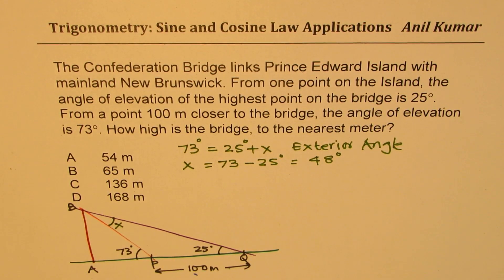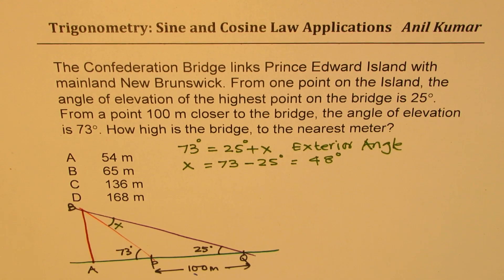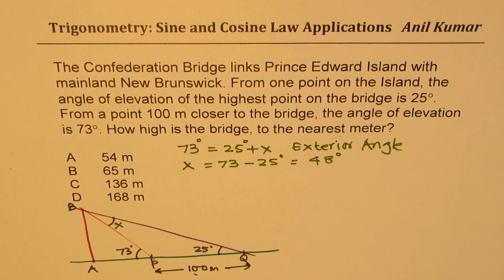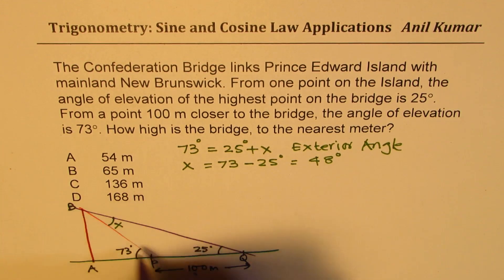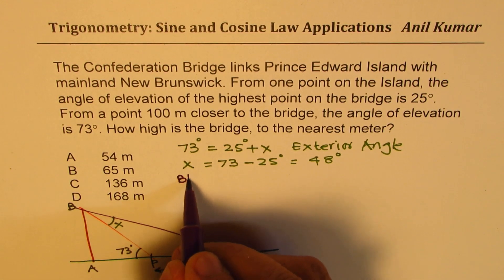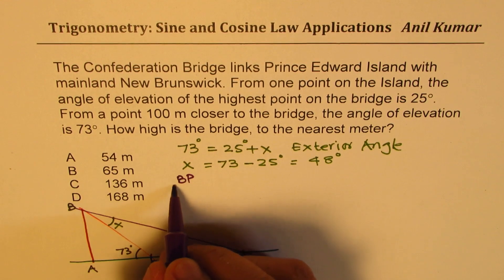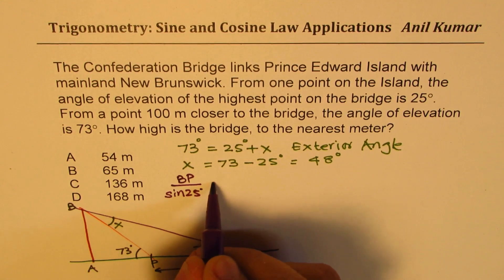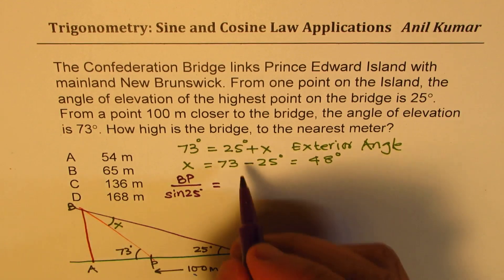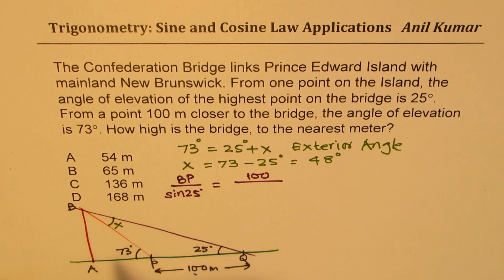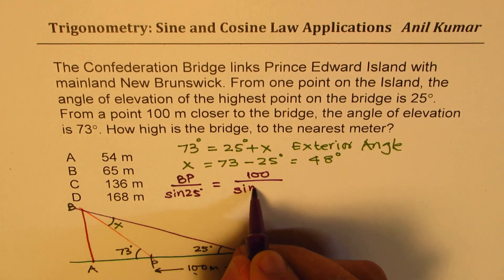We definitely need to use a calculator to solve this question. So we know X is now 48 degrees. Since we know X, we can find what BP is. We can use the sine ratio to figure this out. So BP over sine of 25 degrees should be equal to 100 over sine of 48 degrees.